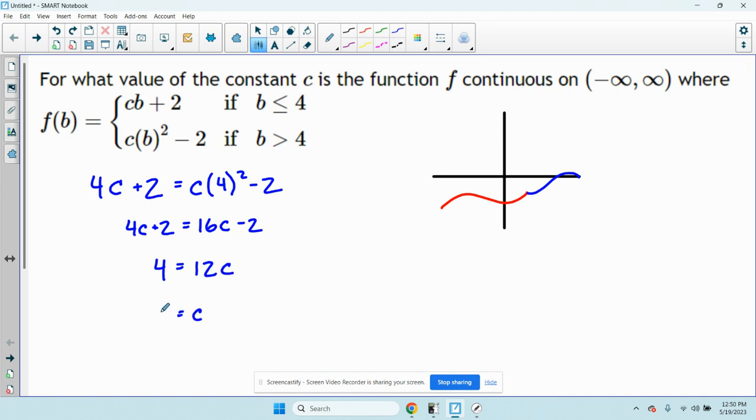So getting c by itself, I have c equals 4 divided by 12 which is going to be the same thing as one third. I'm not sure how they want you to enter it, maybe as a fraction or you could probably put in point three three three three. I'm not quite sure. I think this is probably the best way to go about it.